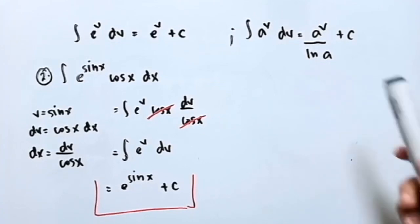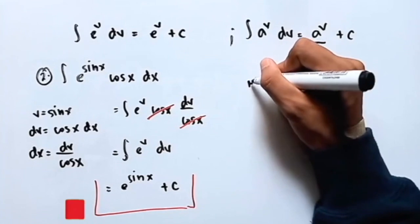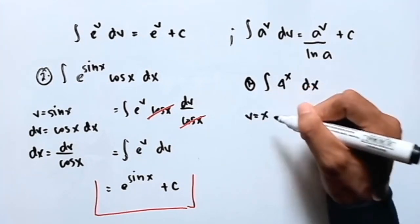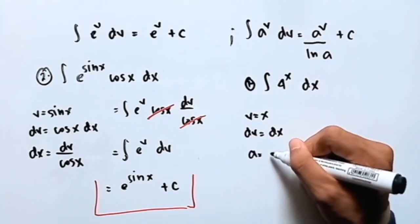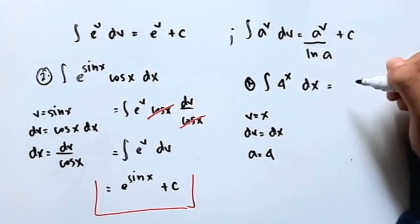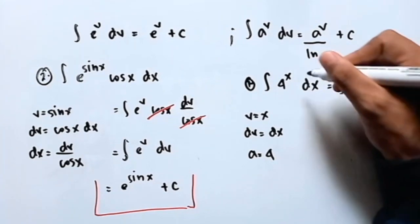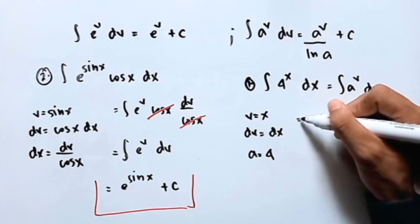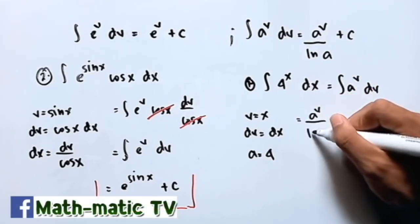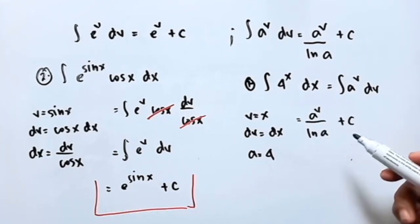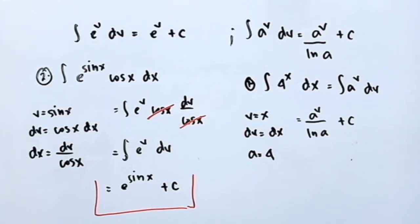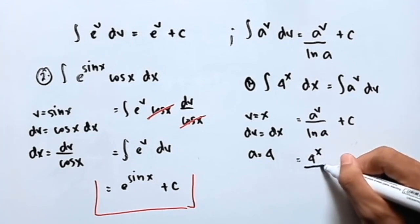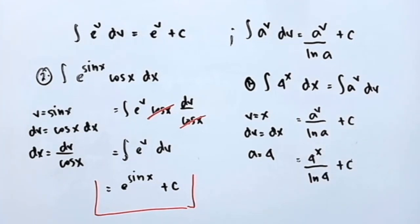So let's try a problem using the other formula. For problem number one, let's integrate 4 raised to x dx. So v is equal to x, dv is equal to dx, and a is equal to 4. Following the formula, this is equal to the integral of 4 raised to x dv, which gives us a raised to v over ln of a plus c. Substituting back, a is 4 and v is x, so the final answer is 4 raised to x over ln of 4 plus c.